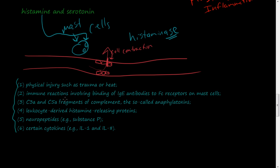Immune reactions involving binding to IgE antibodies to the Fc receptors on mast cells. So anytime antibodies that are circulating here in the bloodstream, IgE specifically, bind to little receptors here on mast cells, then that's going to release histamine.